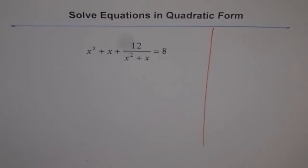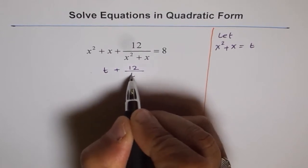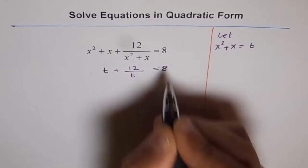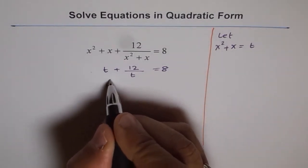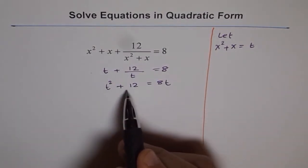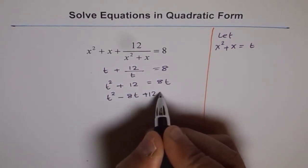Let's use this side as a rough-work column and do the substitution. We let x squared plus x equal to t. Rewriting the equation, t plus 12 over t equals 8. Bringing 8 to the left side and multiplying both sides by t, we get t squared plus 12 equals 8t, which rearranges to t squared minus 8t plus 12 equals 0.